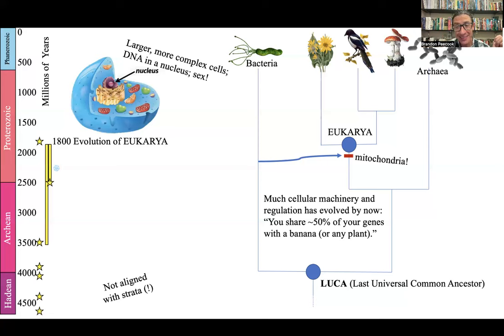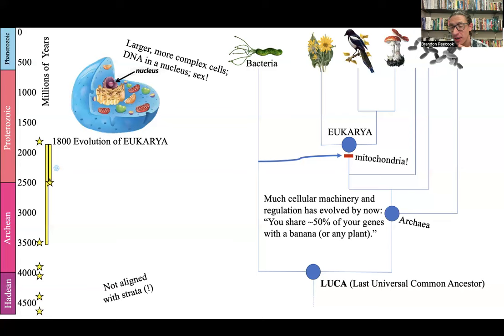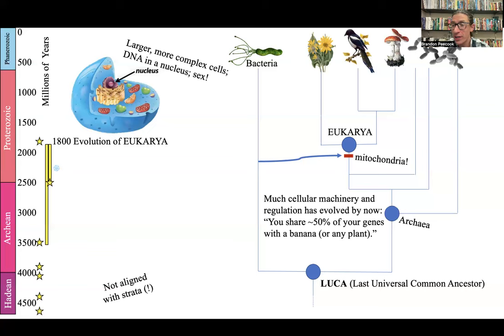I think everybody learns endosymbiosis in intro bio, but they don't really let it in and think about what it really means. The common ancestor of all archaea is a little different there on your slide — some archaeans are more closely related to us eukaryotes than to other archaeans. Just like prokaryotes as a category are paraphyletic relative to eukaryotes, even archaeans are not one clade. Some archaeans are more closely related to us eukaryotes than others — and this is stuff we're only just now learning, a lot of it new in the last 10-20 years.